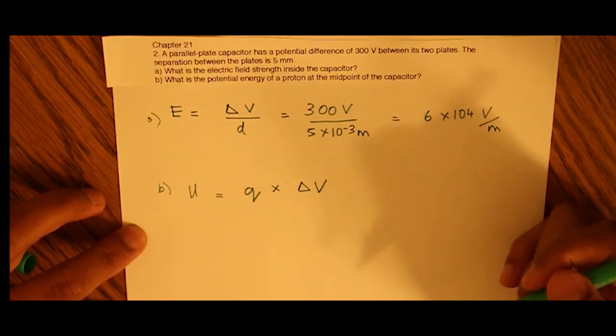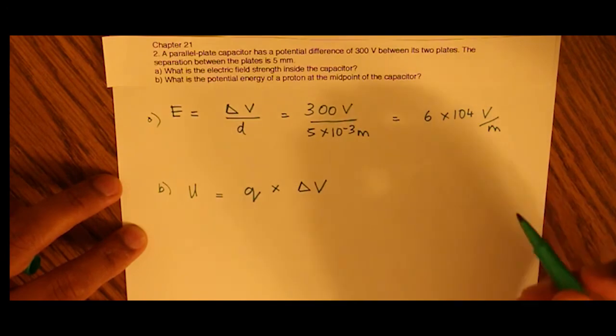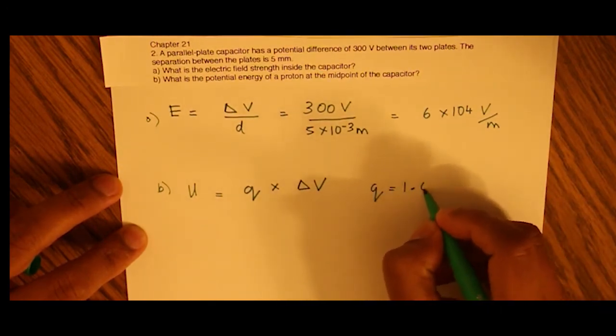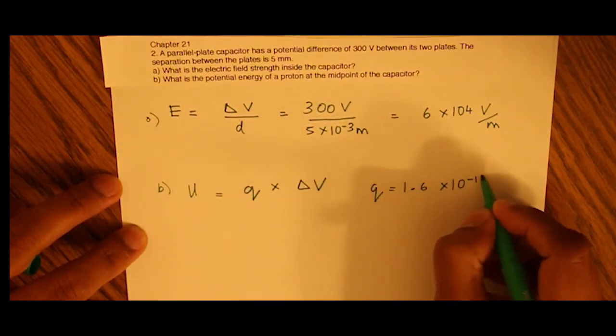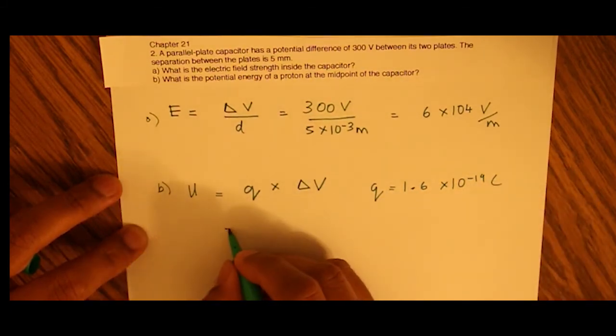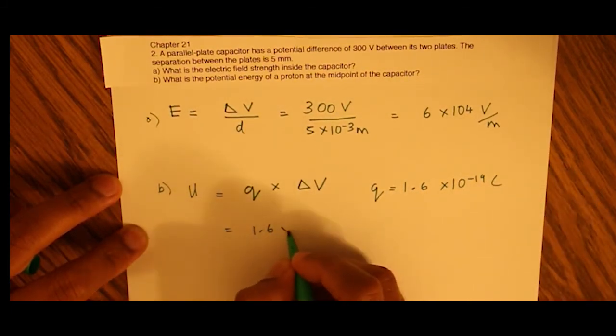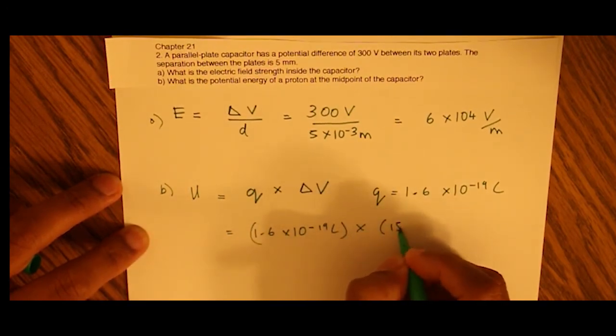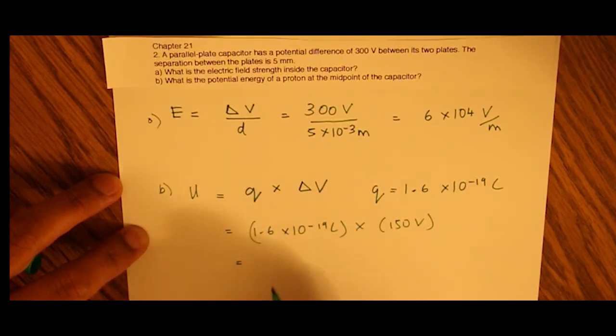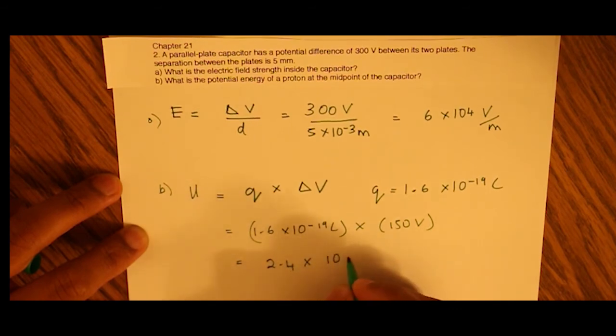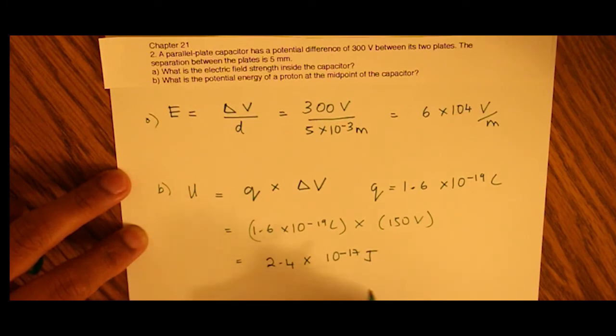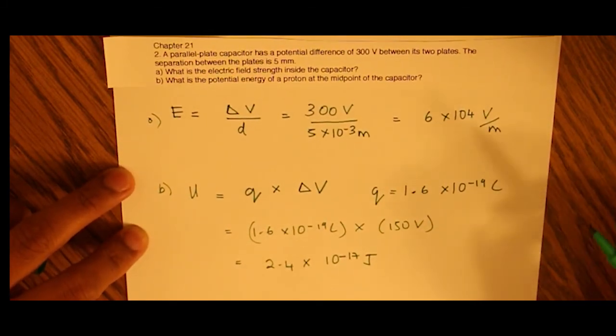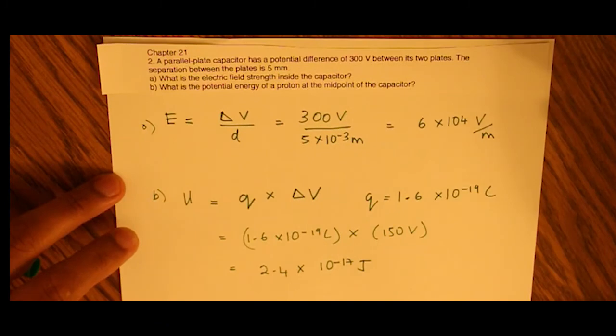We know our delta V, and we know the charge of a proton is 1.6 times 10 to the negative 19 coulombs. We multiply these together and end up with a potential energy of 2.4 times 10 to the negative 17 joules. That's the potential energy of a proton at the midpoint of the capacitor.